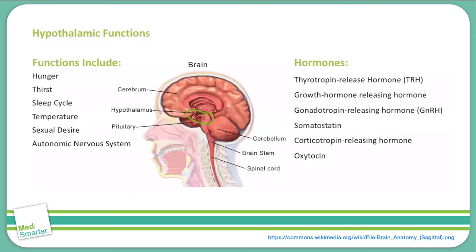Anti-diuretic hormone, also known as ADH or vasopressin, is a hormone that acts on the collecting duct of the kidney to increase the absorption of free water, thus increasing intravascular volume, making urine more concentrated and blood more dilute. It is released in response to increased serum osmolarity and decreased intravascular volume.